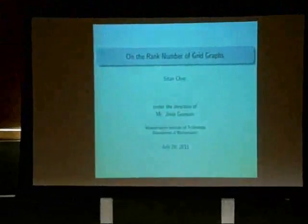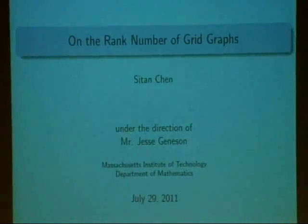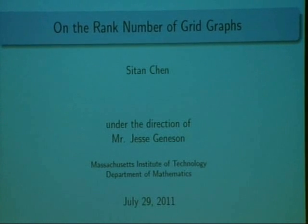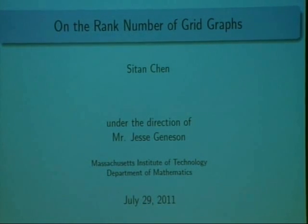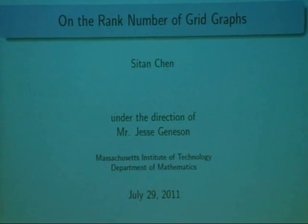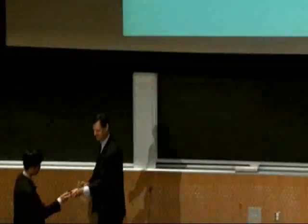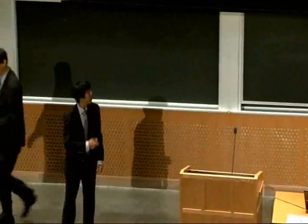Our next speaker is Stan Chen, who worked under Mr. Jesse Jenison, and he will speak on the rank number of grid graphs. Our object of interest in this study is graph labeling. A graph labeling is a function that takes the set of vertices of a graph to a set of integers.